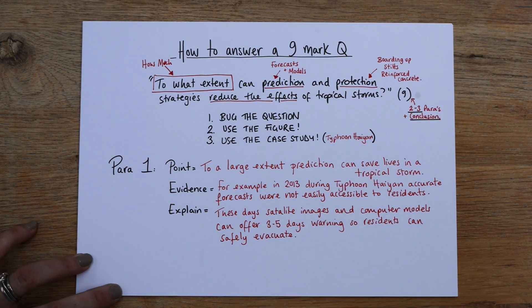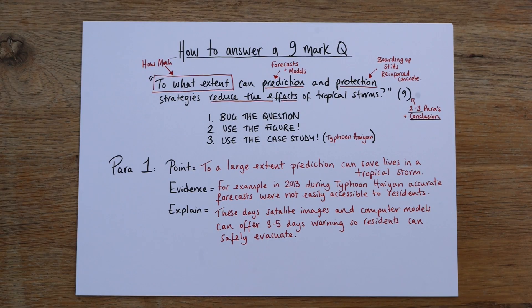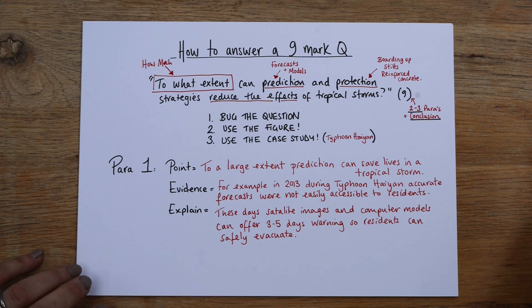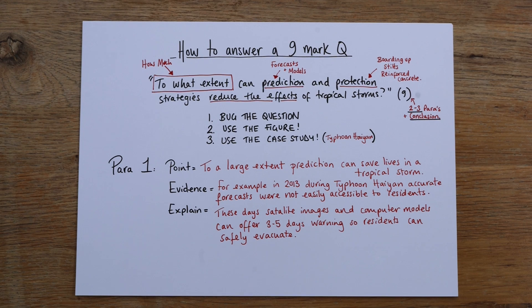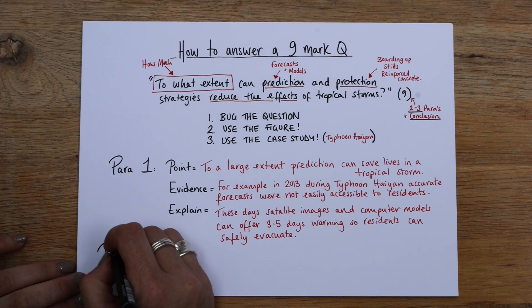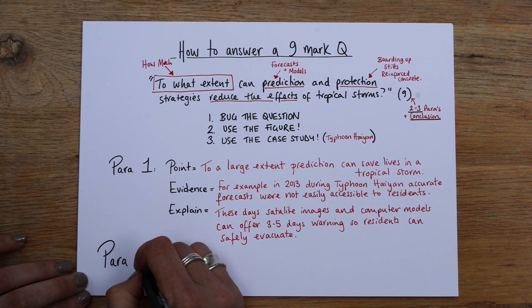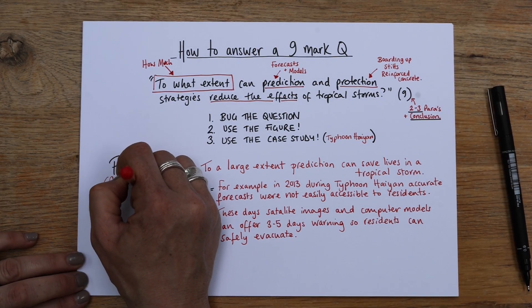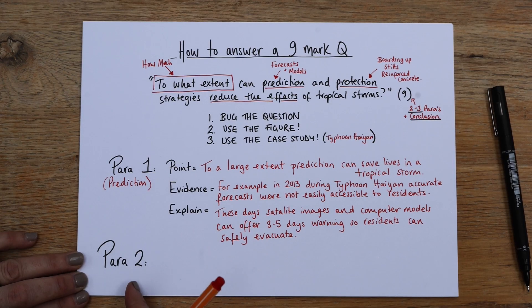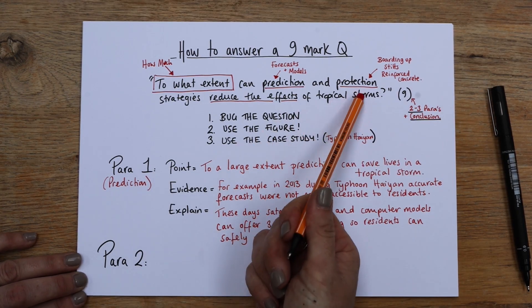So residents can safely evacuate. You know, you could carry that on, you know, talk about if they're not in the risk zone, then they could happily just carry on with their lives. But yeah, that's your kind of process. That's what you want to be looking at. And then for paragraph two, so if we've already talked about prediction, so I'm just going to write prediction there.